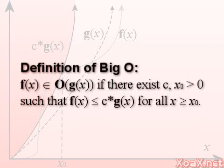Formally, we say that f(x) is in Big O of g(x) if there exist positive constants c and x₀ such that f(x) is less than or equal to c times g(x) for all x greater than x₀.